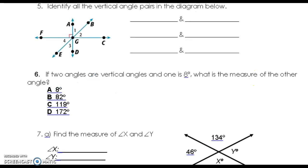Identify all the vertical angles in the diagram below. So we have AGB and GD, and EGD and BGC, and FGE and AGF and DGC.